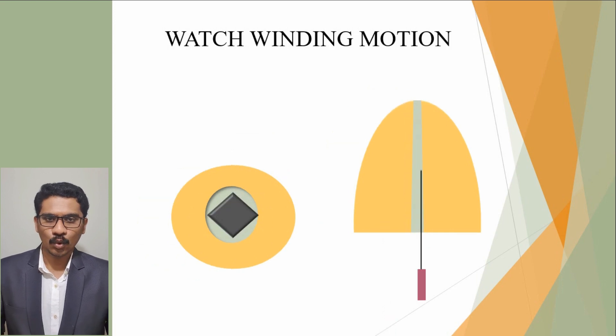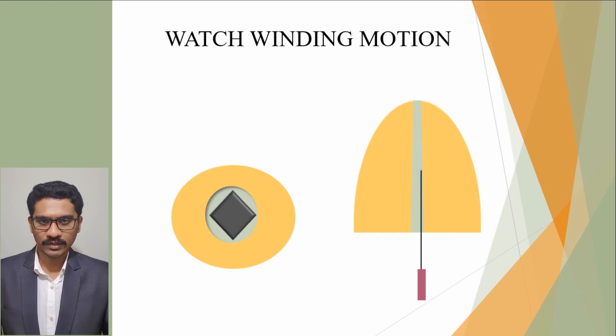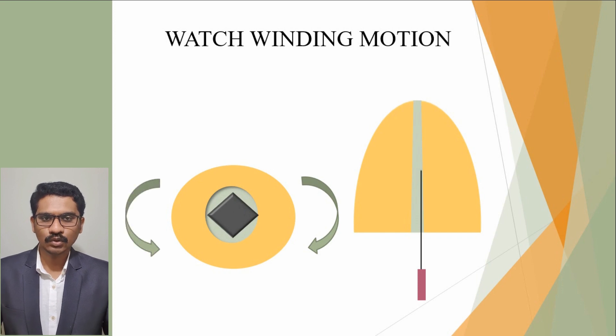Another technique commonly used is the watch winding motion. Watch winding is reciprocating back and forth, i.e. clockwise and counterclockwise rotation of the instrument in an arch. It is used to negotiate canal and to work files to place. Light apical pressure is applied to move the file deeper into the canal.